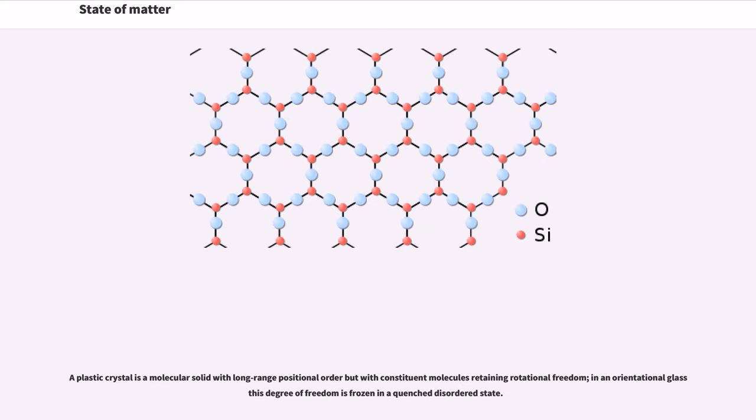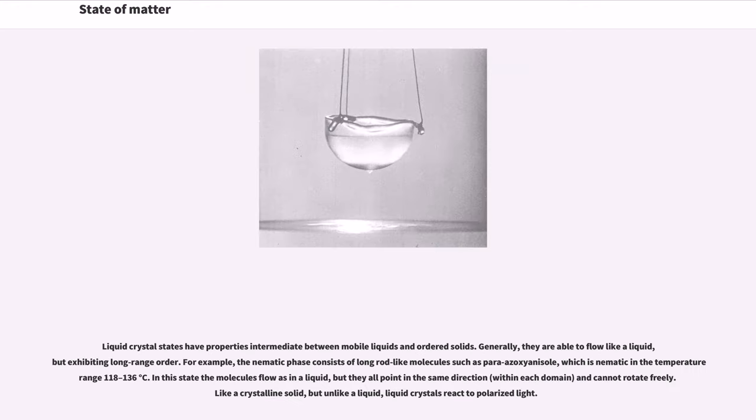A plastic crystal is a molecular solid with long-range positional order but with constituent molecules retaining rotational freedom. In an orientational glass these degrees of freedom are frozen in a quench disordered state. Similarly, in a spin glass magnetic disorder is frozen. Liquid crystal states have properties intermediate between mobile liquids and ordered solids. Generally, they are able to flow like a liquid, but exhibiting long-range order.